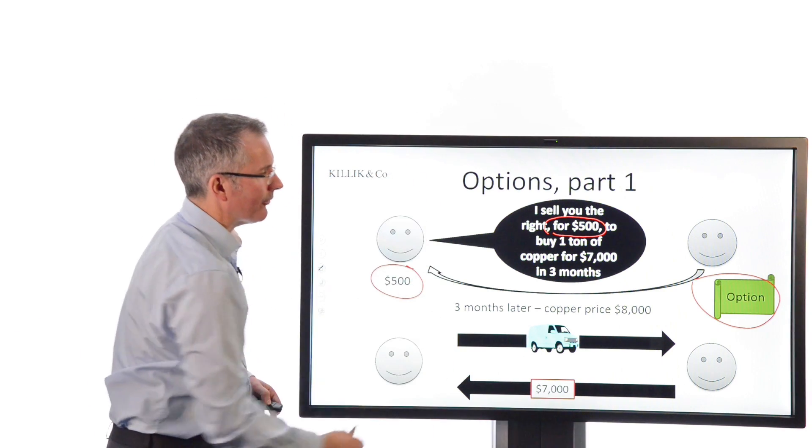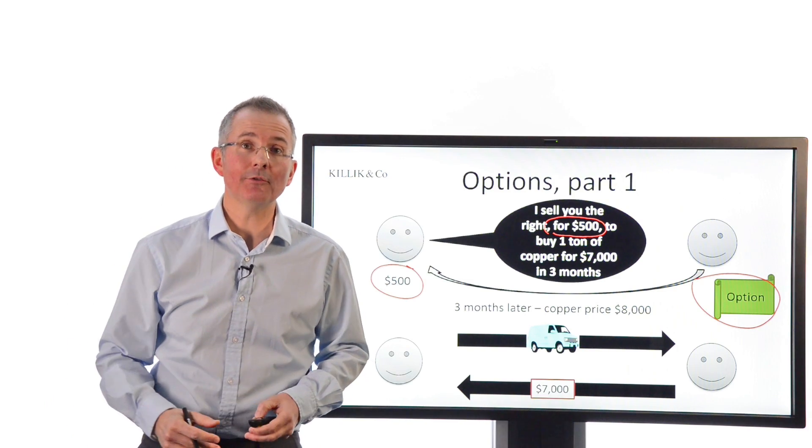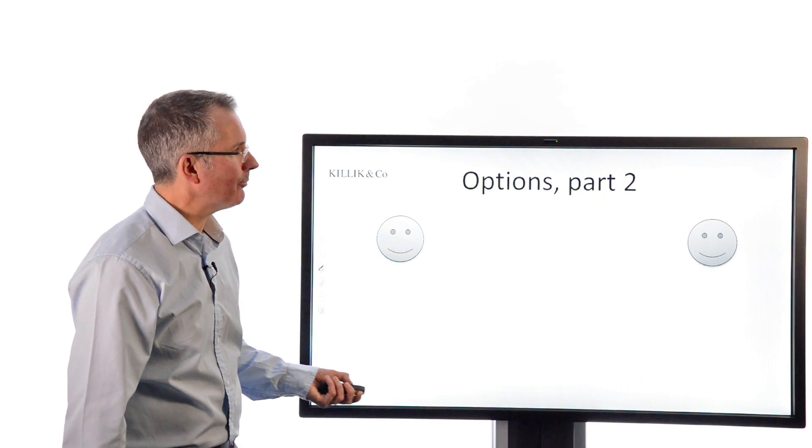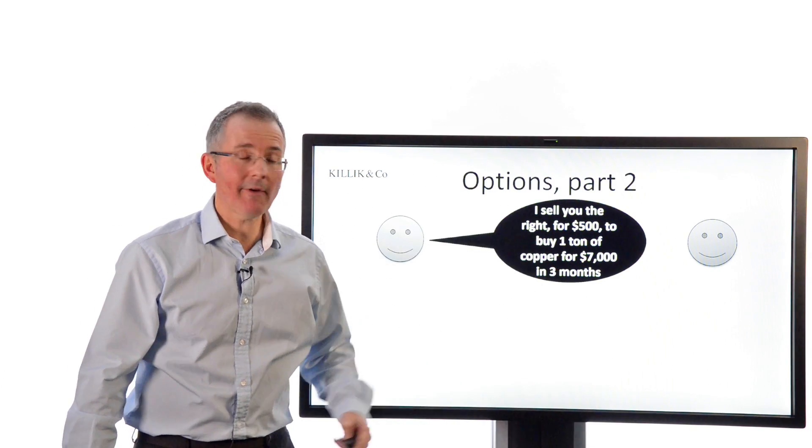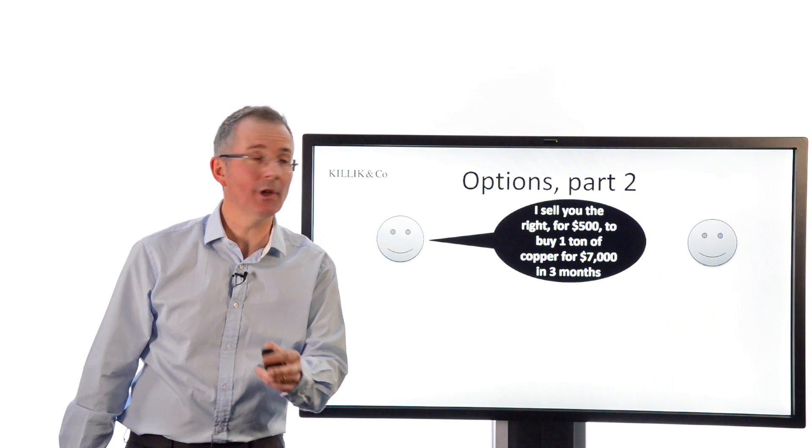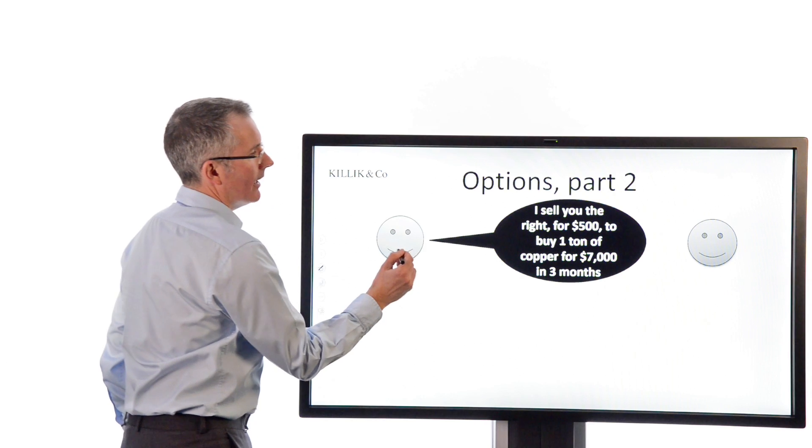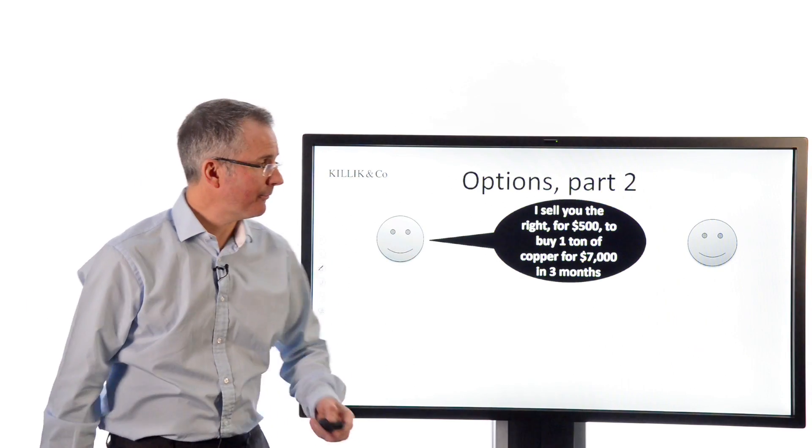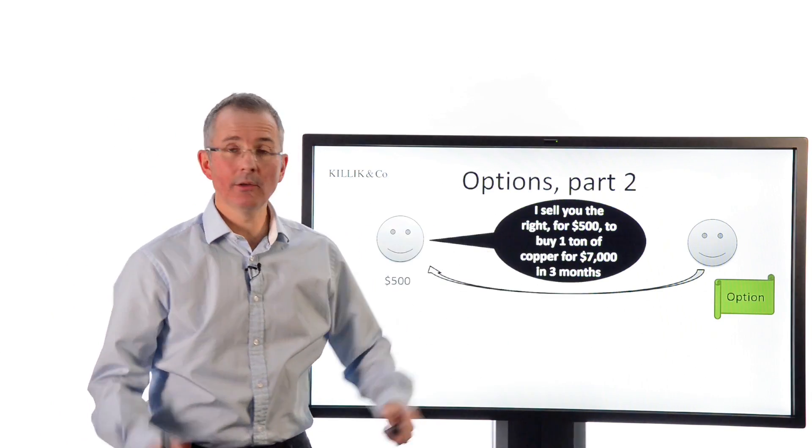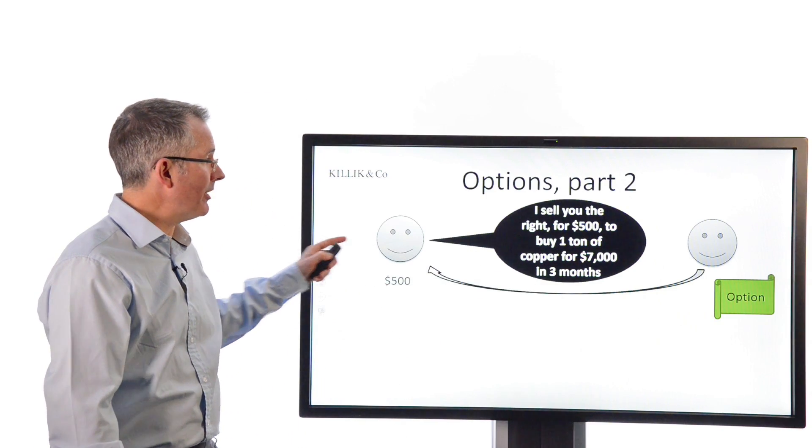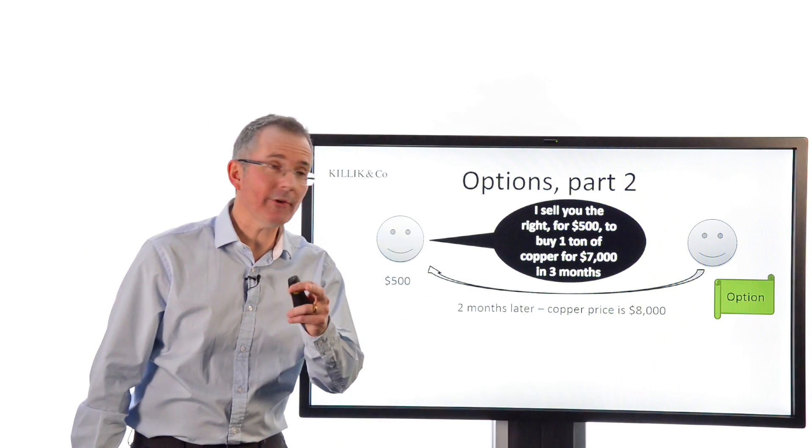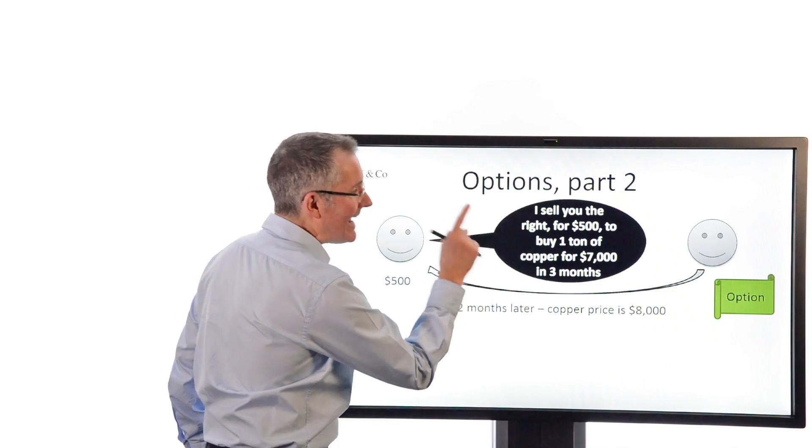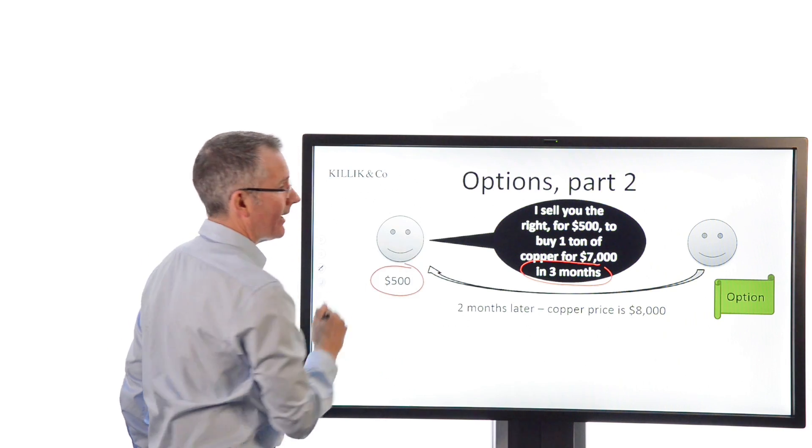Could that be turned into a different scenario where no copper changes hands and that introduces the idea of trading these things? Well, if I can finish with options part two. The opening is the same. Two players. I'll sell you the right for $500 to buy a ton of copper off me for $7,000 in three months' time. Exactly the same word-for-word opening position and exactly the same motives, essentially. Someone worried about the copper price rising. Over here, someone worried about the opposite. There's the opening deal. You hold an option. Let's change the facts very slightly. Two months later, the copper price is $8,000.